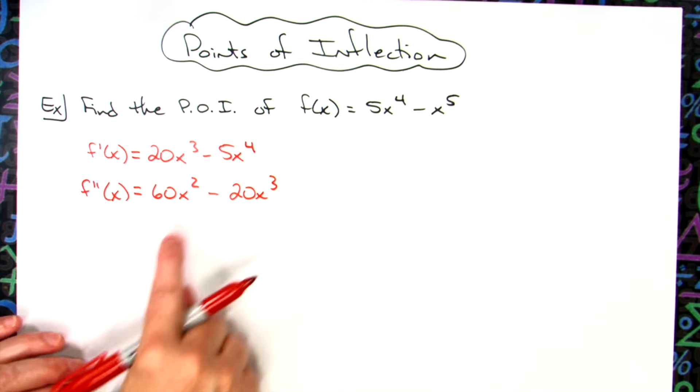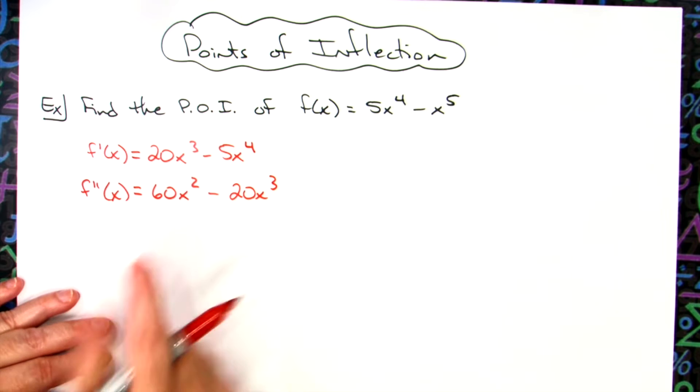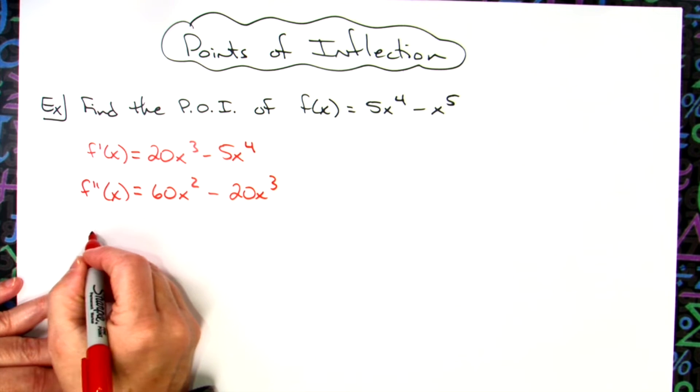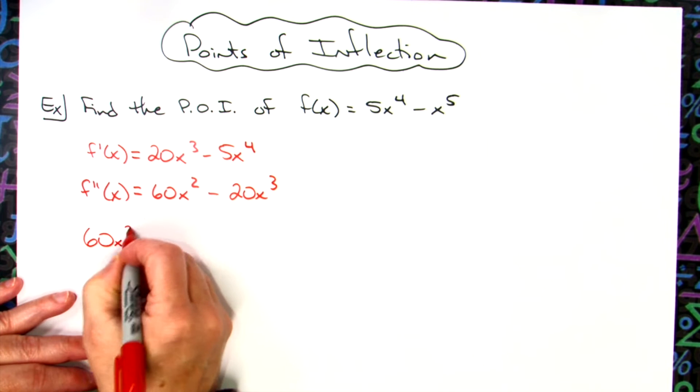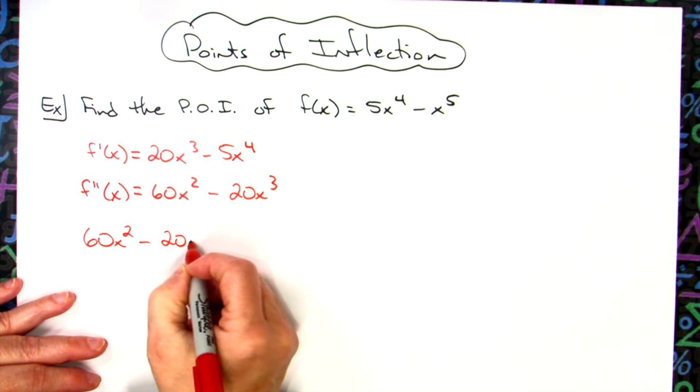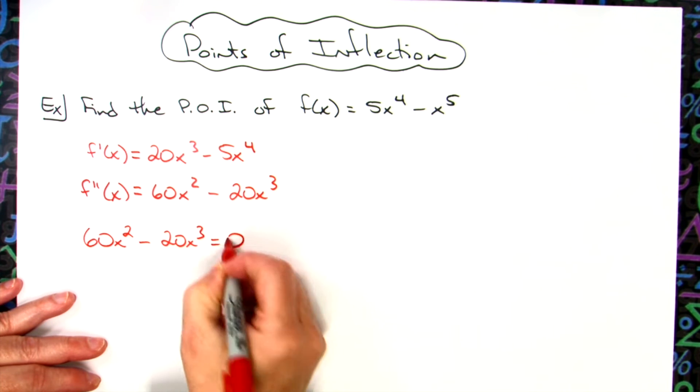At this point you're going to take that second derivative, set it equal to zero to find your possible points of inflection. So we'll have 60x² - 20x³ and set that equal to zero.